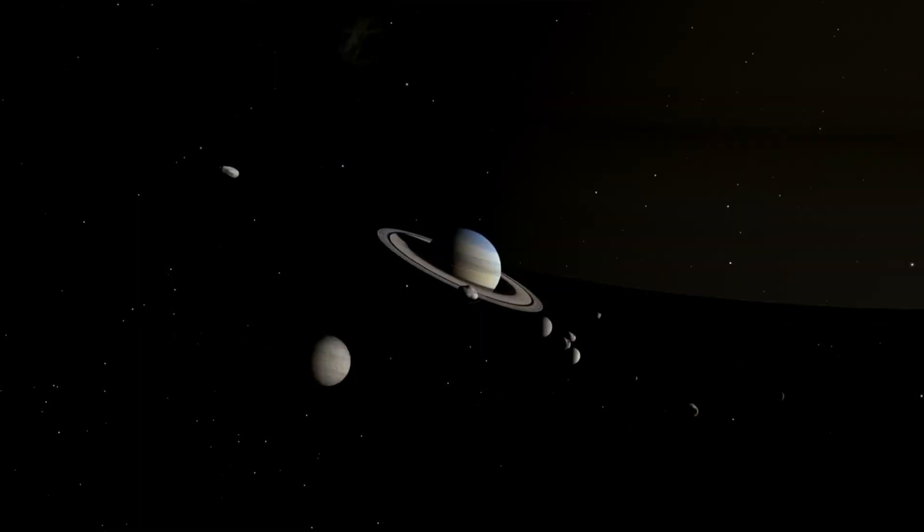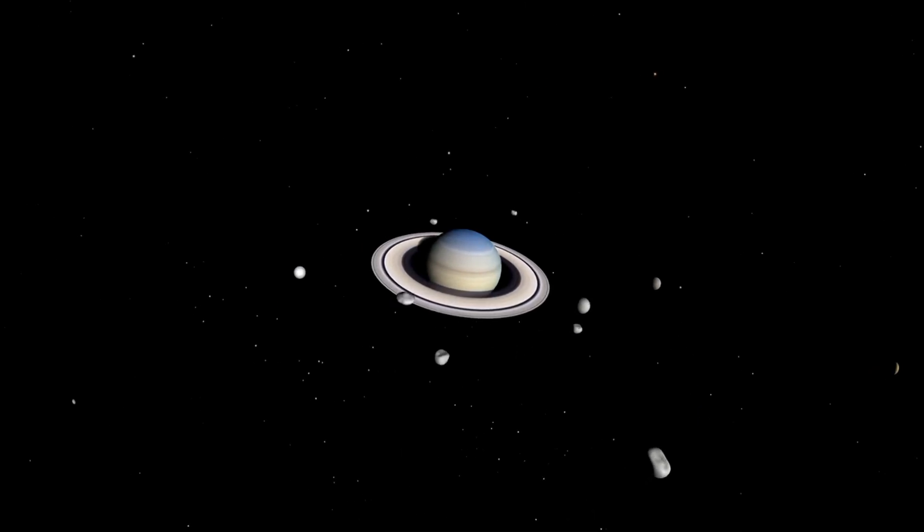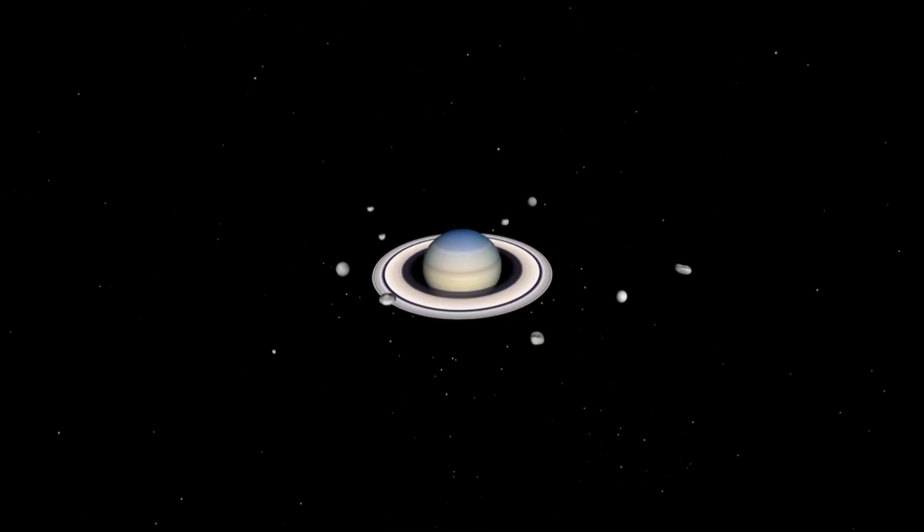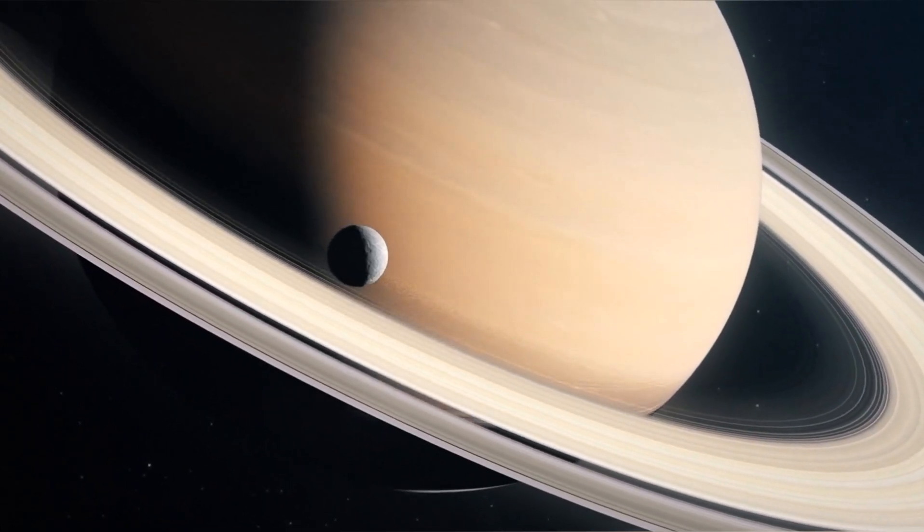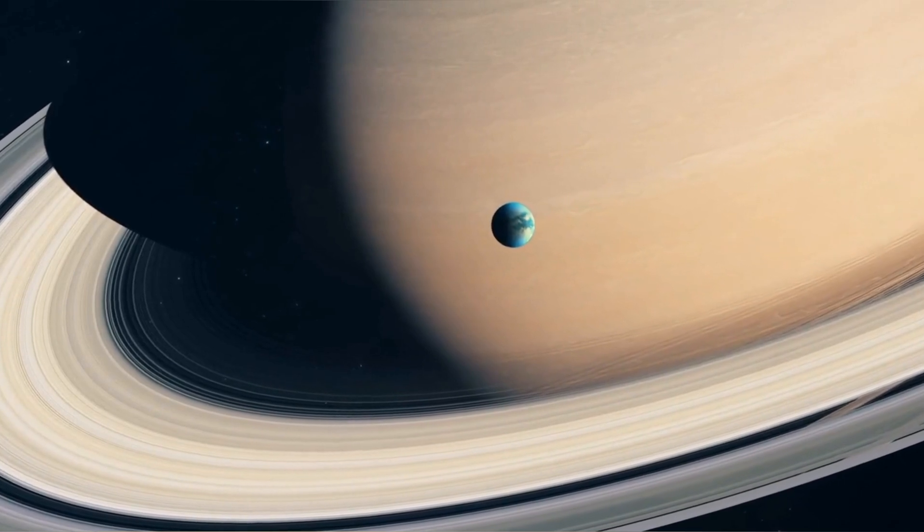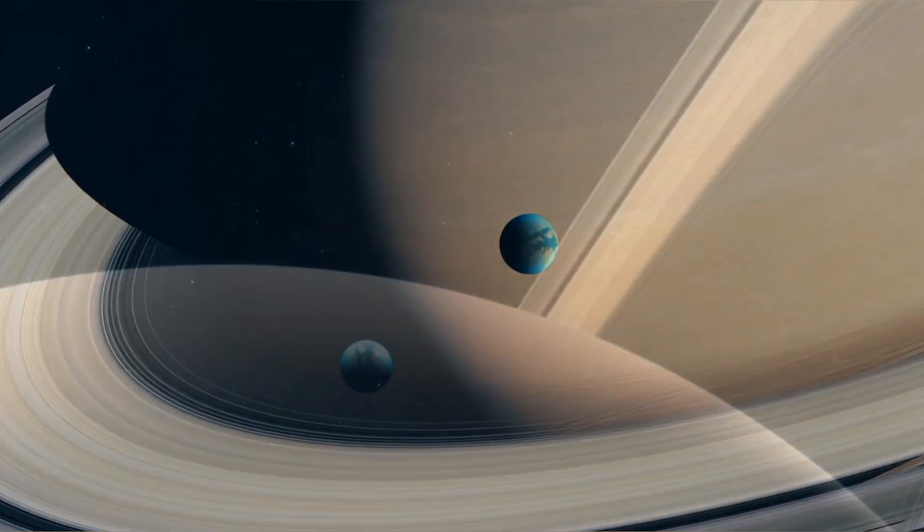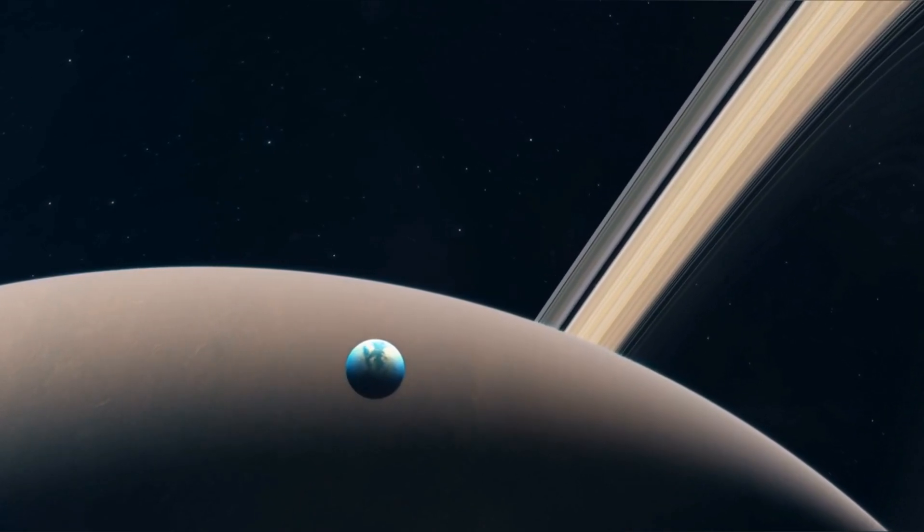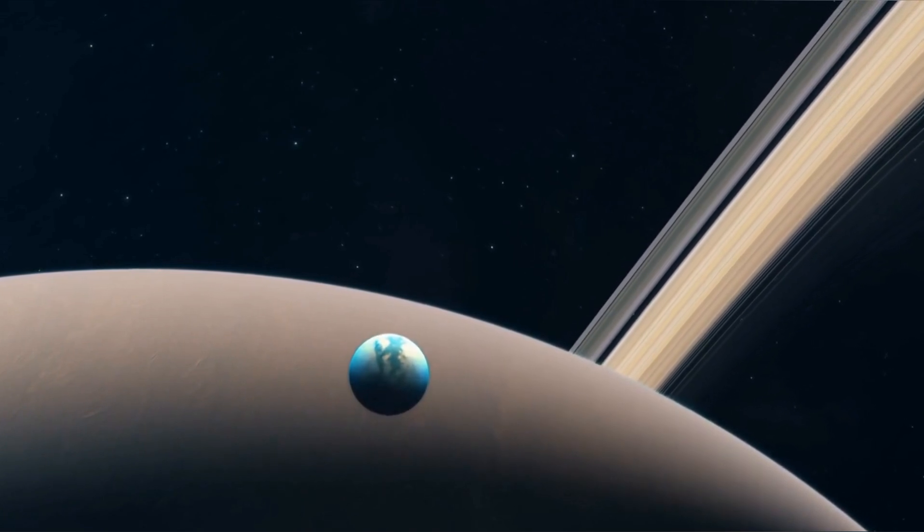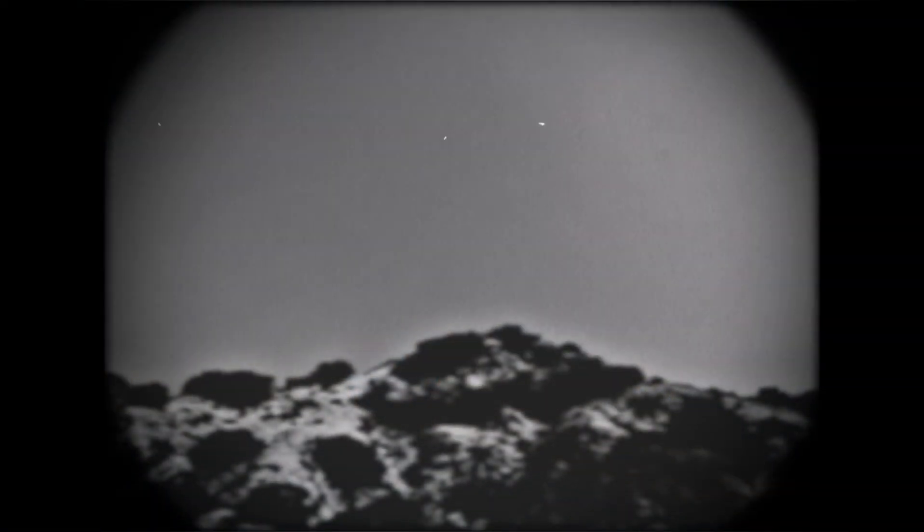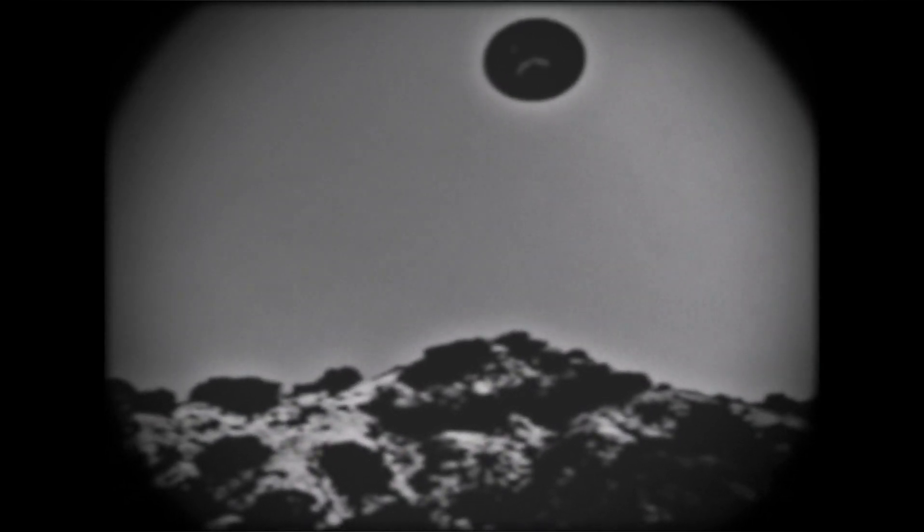Saturn's Moons: Saturn boasts a remarkable moon system with a total of 145 known moons at the time of the last count. This diverse collection of moons ranges in size, shape, and composition. Titan, Saturn's largest moon, is especially intriguing due to its similarities to Earth. It has a dense atmosphere primarily composed of nitrogen, liquid lakes on its surface, and the potential for organic chemistry. Scientists have considered Titan as a possible location for extraterrestrial life due to its unique characteristics.